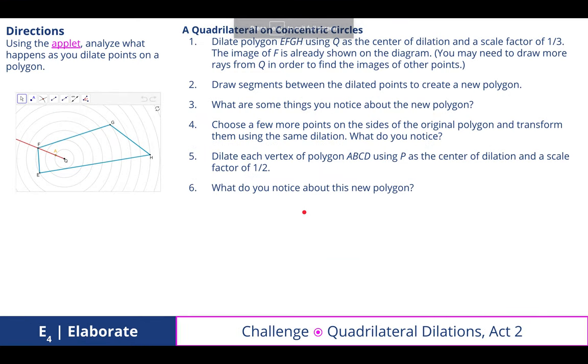In quadrilateral dilation act two, we notice that there are no rays in here. You have to draw them yourself. It actually shows you one done for you, and this time you're going from the larger one to a dilated image that's smaller. In this case, this would be one-third the size to A.